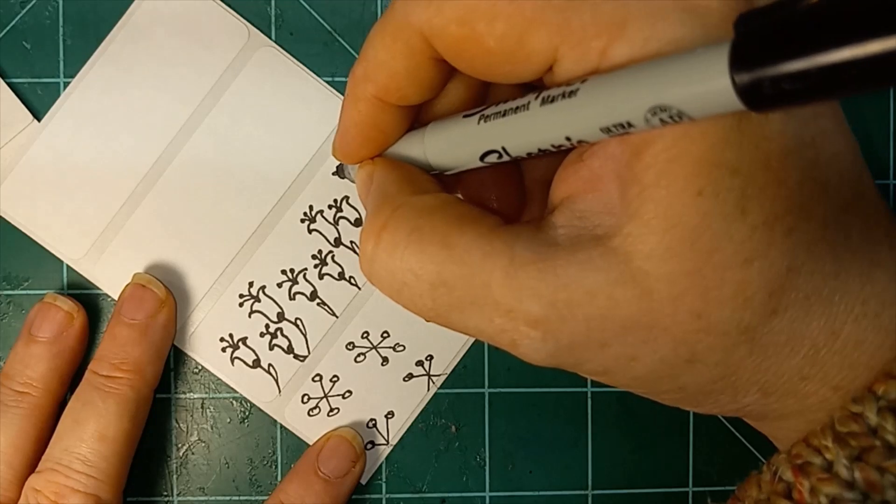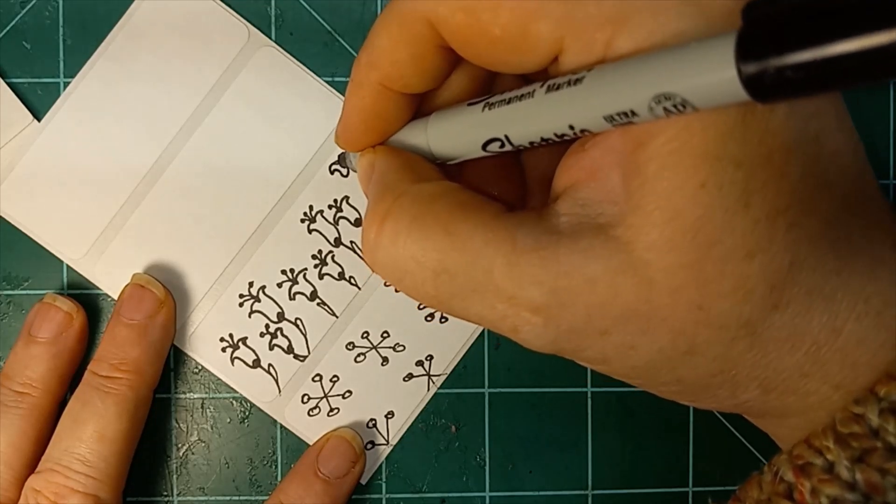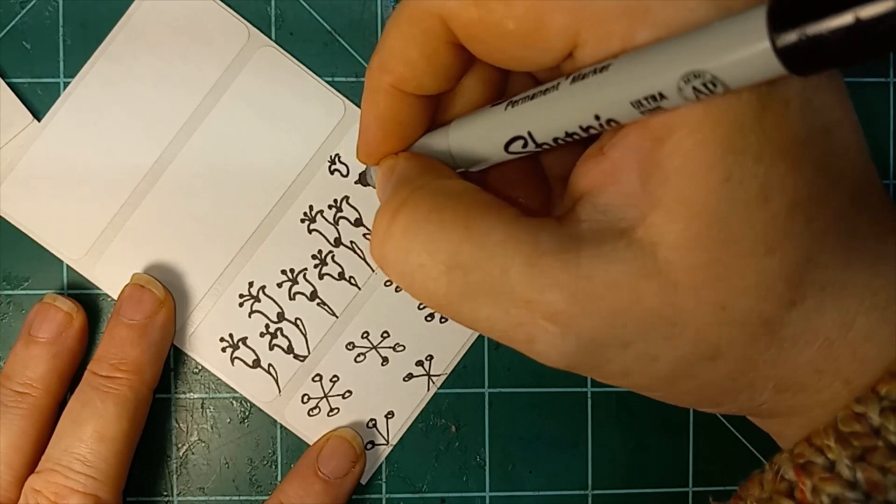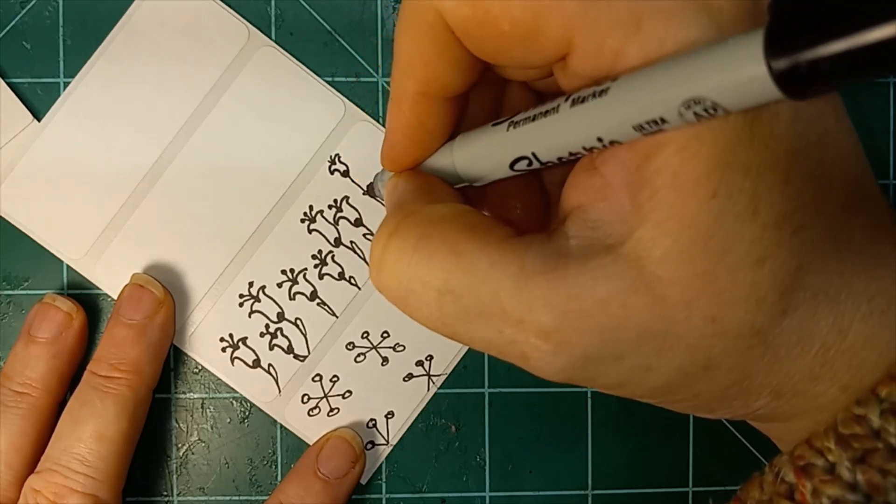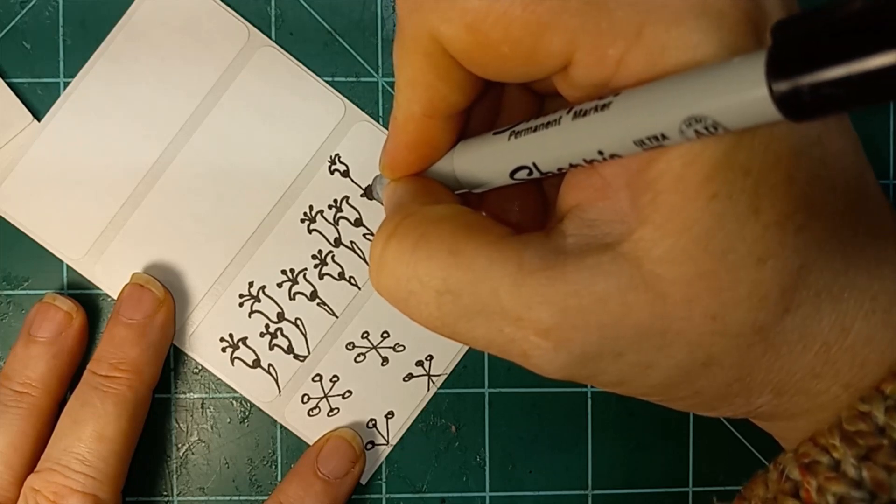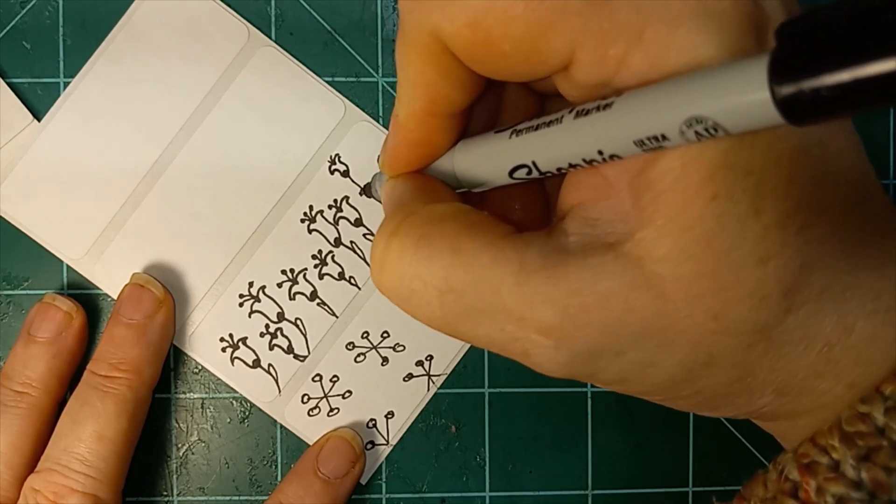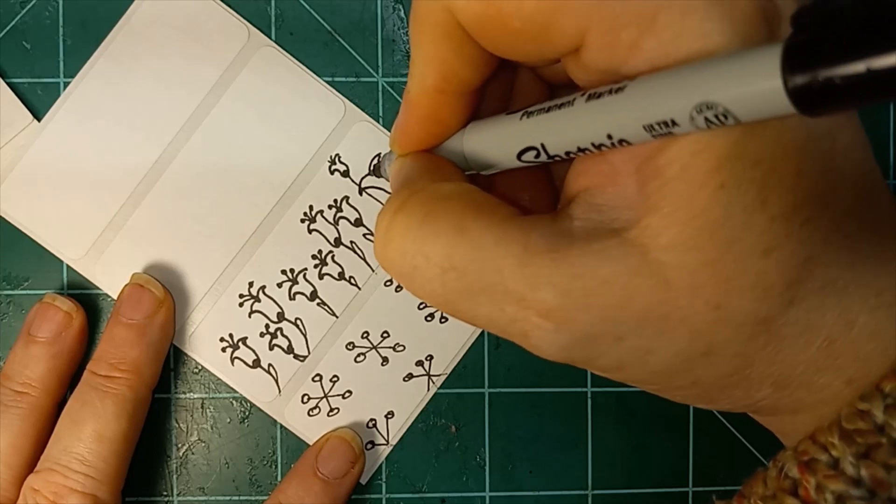Let's see. Let's draw a little small one way up here. So it's going to have a good, big, long stem. And then we'll draw a big one kind of overlapping just a little bit right there. There we go.